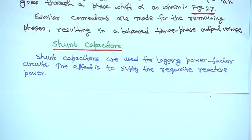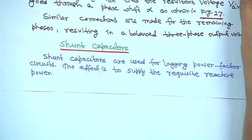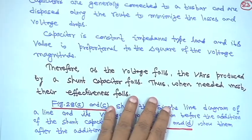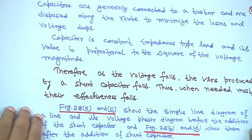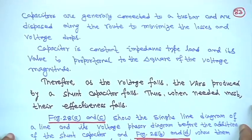The effect is to supply the requisite reactive power. A shunt capacitor basically injects reactive power. Shunt capacitors are generally connected to a bus bar. If you go to any substation — 33 kV or above — you will see shunt capacitors there.